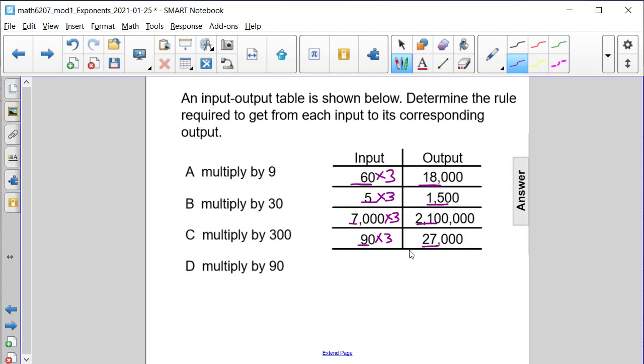Now let's look at the zeros to determine if we're going to have 330, 300, or 3,000 as the number that we're multiplying by.